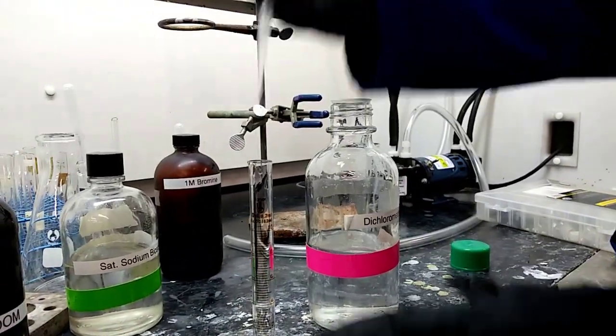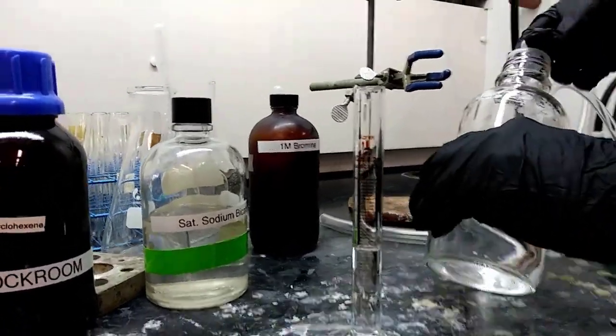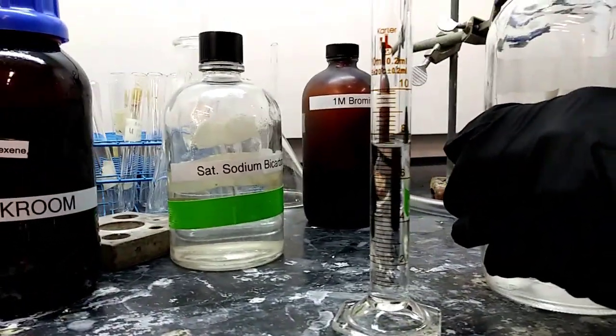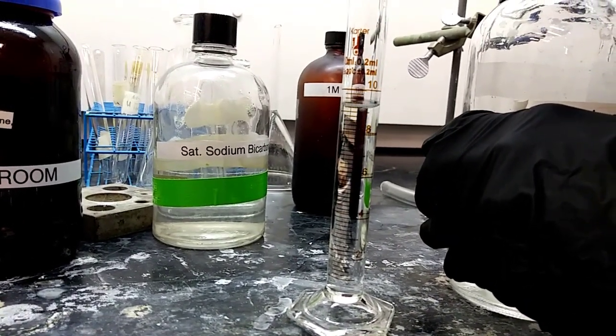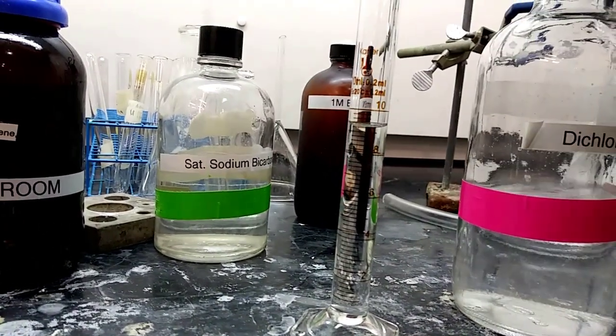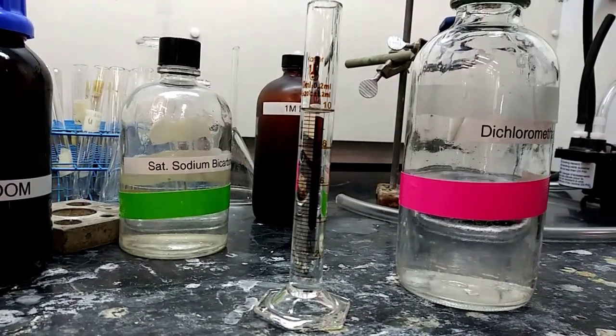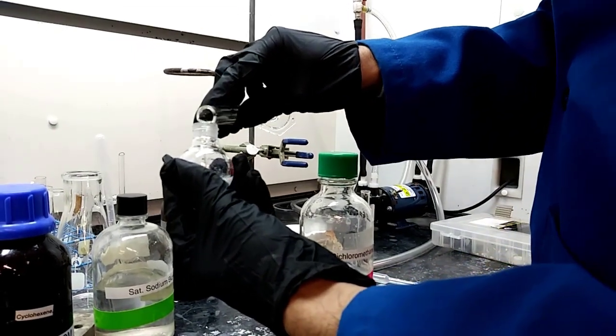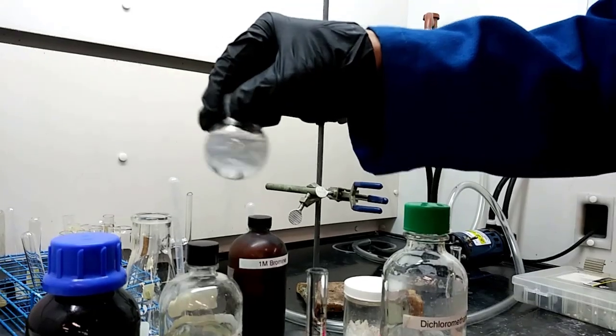Now they are getting a volume of dichloromethane. They need 10 milliliters of DCM or dichloromethane. Now along with their E-Stilbene solid, they're adding that dichloromethane.